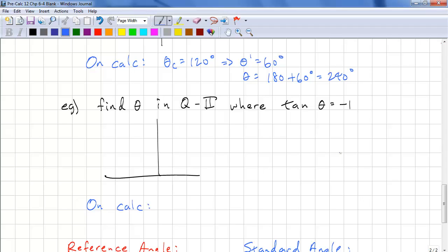Now we need to find theta in quadrant 2 where tangent equals negative 1. Remember, this is y over x. So we can have 1 and negative 1. And this is theta prime. So theta prime is pi over 4. Theta equals pi minus pi over 4. And we get 3 pi over 4.